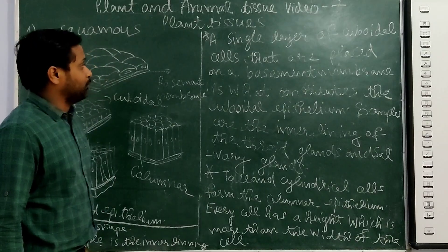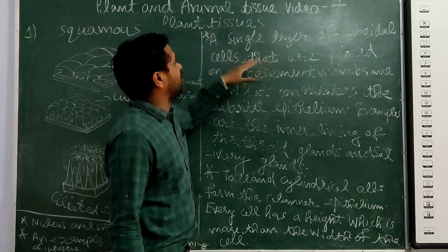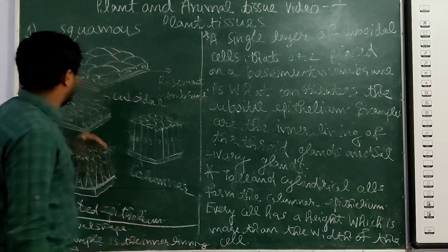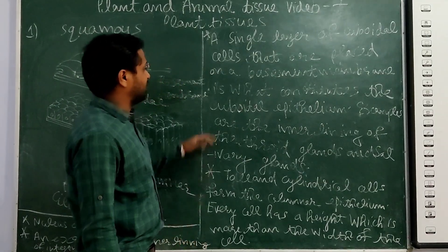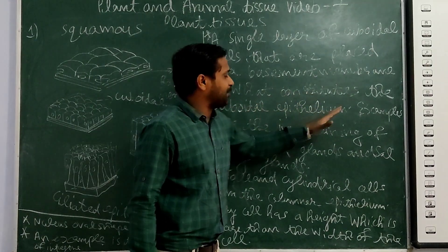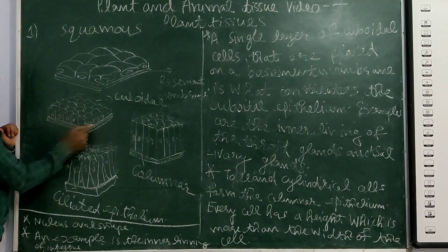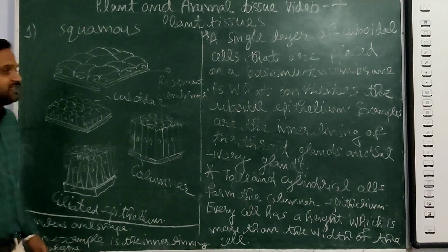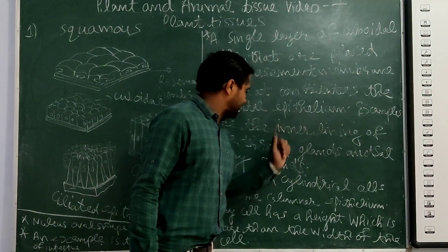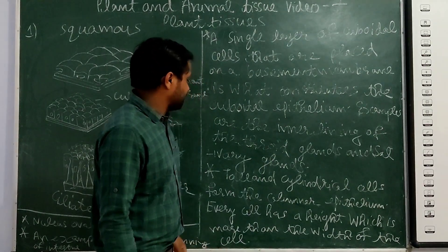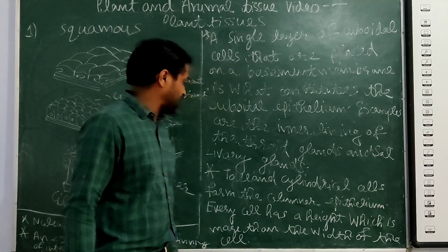Next is the cuboidal epithelium tissue. Cuboidal is a single layer of cuboidal cells, where the base is called the basement membrane. A single layer resting on the basement membrane is what constitutes the cuboidal epithelium. Examples are the inner lining of the thyroid gland and the salivary gland.